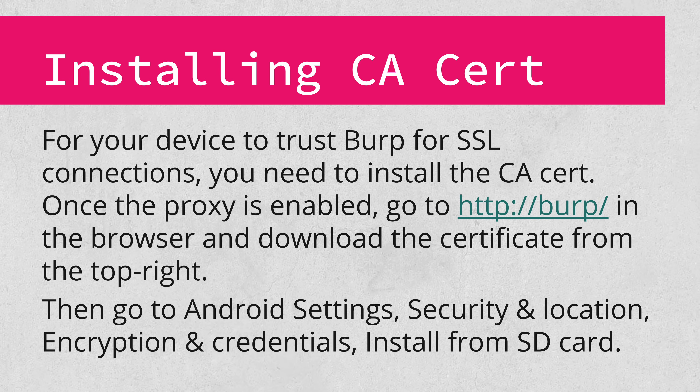Now that your proxy is set up, you need to install the CA certificate, or applications won't be able to negotiate SSL connections with the proxy. With the proxy enabled, go to http://burp in a browser. In the top right corner of the page, you'll have a link to download your Burp installation's unique CA certificate. Click this and download the file. Go to Android settings, click the security and location option, then encryption and credentials, then install from SD card. You'll be able to select the certificate file there.